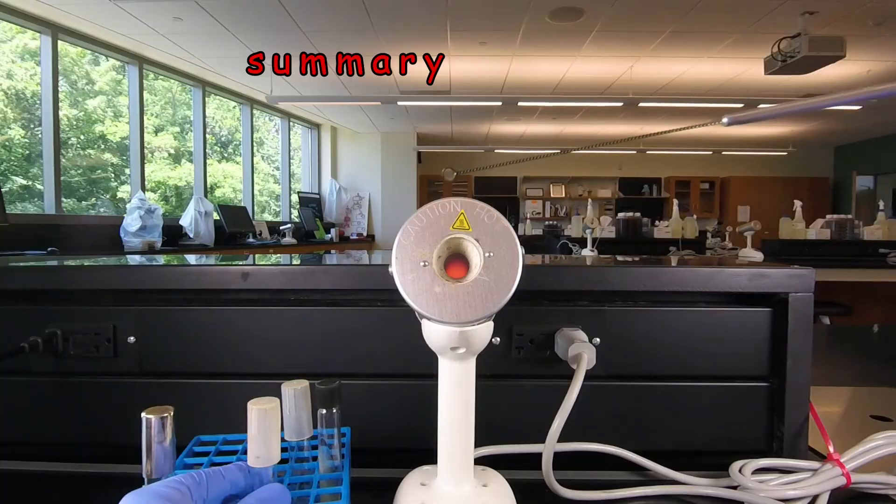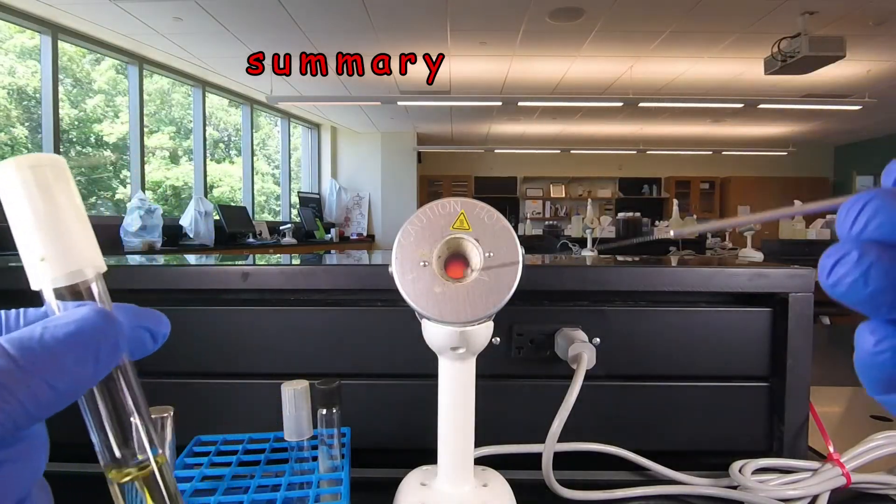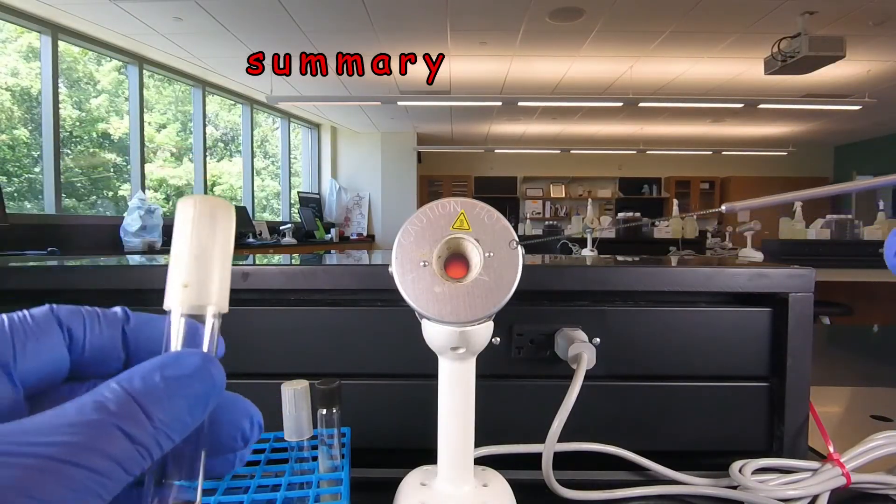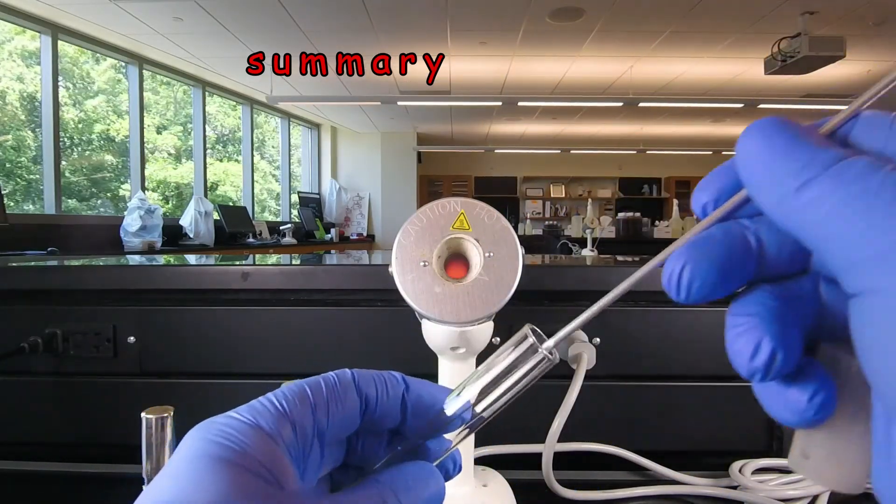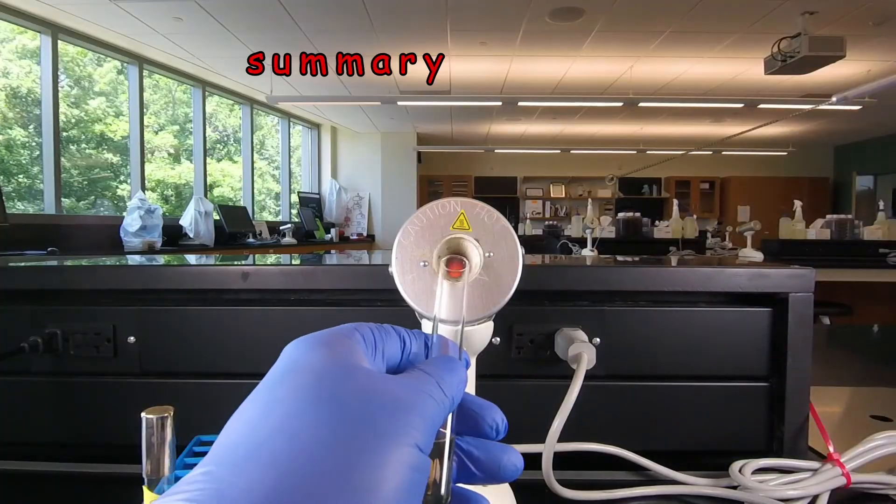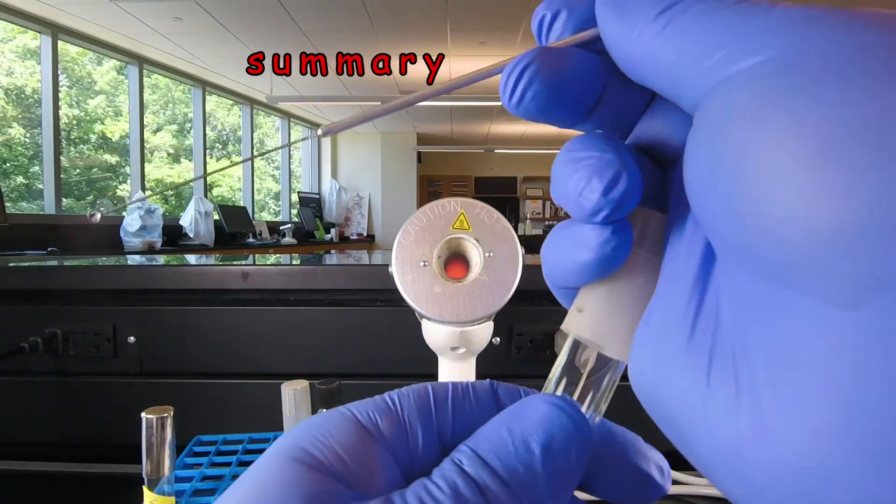And then when we do our inoculations we do the same thing. We have bacteria in the loop we're going to put it into the tube so we'd remove the cap, flame the tube, put the bacteria in, flame the tube and put the cap back on.